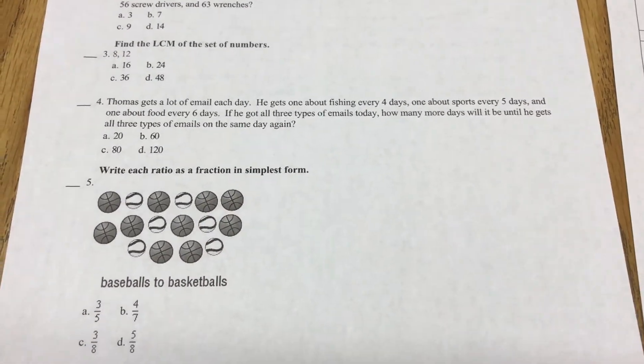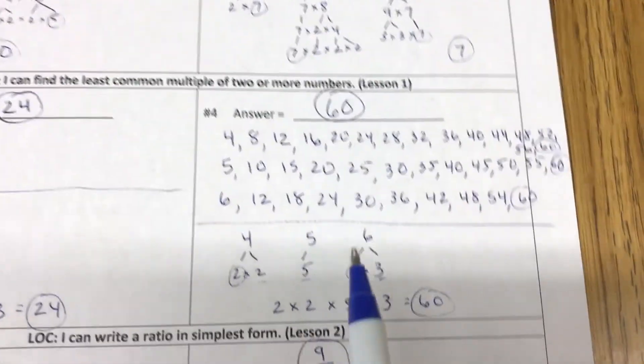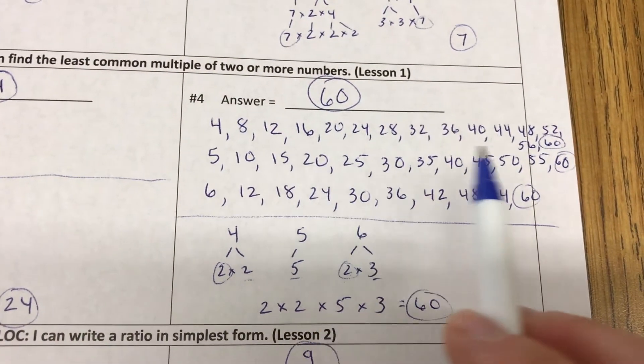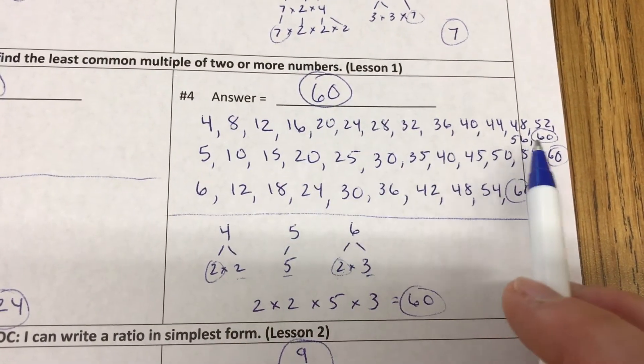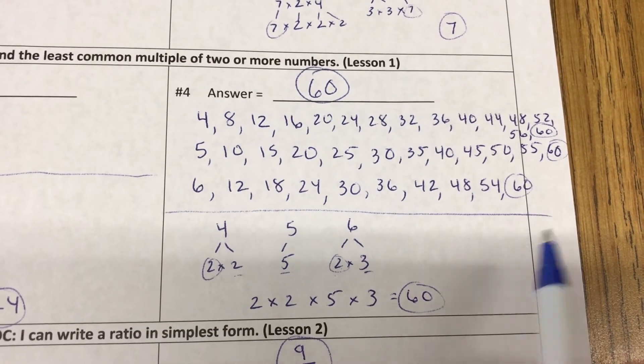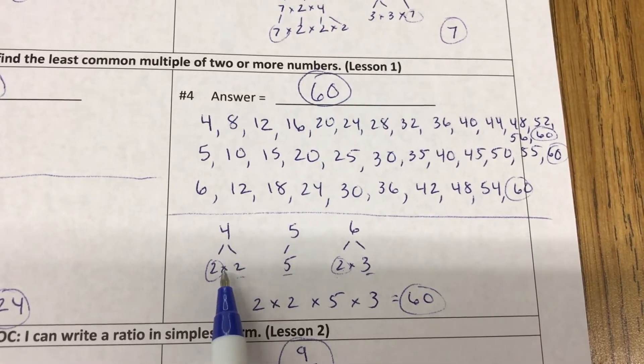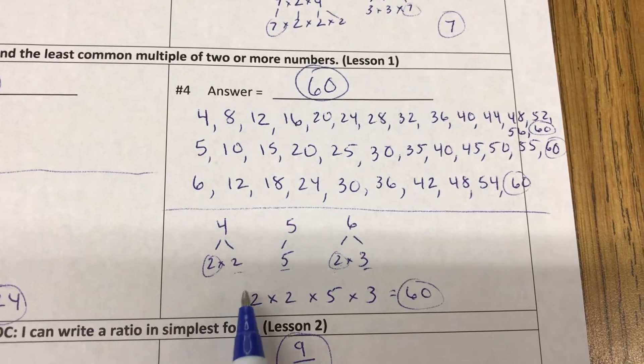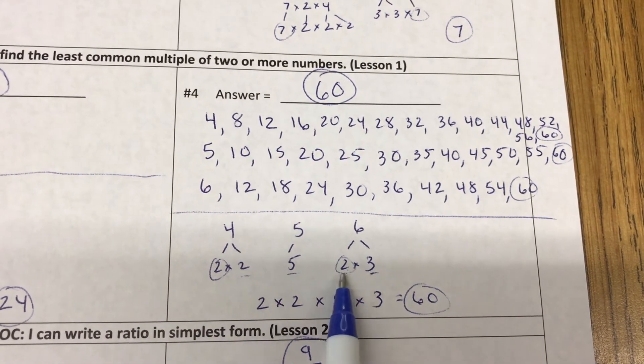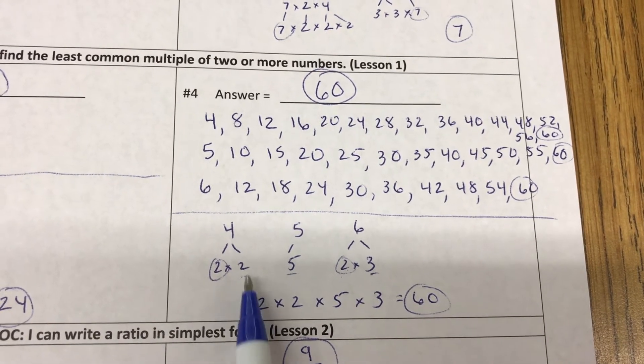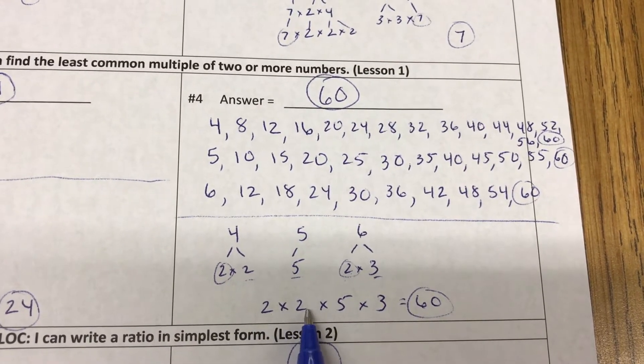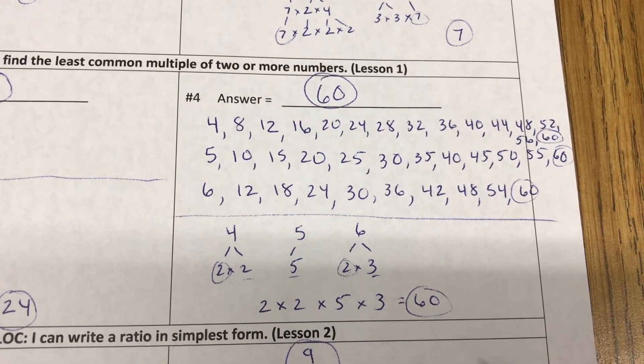This was way easier to do the tree because look at all the multiples I had to list out for 4—that was the worst—and 5 and 6. 60 was the least common multiple. Or here, the factors of 4: 2 times 2 are prime. 5 is already prime. 2 times 3 is 6. So they had 2 in common and then you had another 2, 5, and 3. So 2 times 2 is 4, 4 times 5 is 20, 20 times 3 is 60.